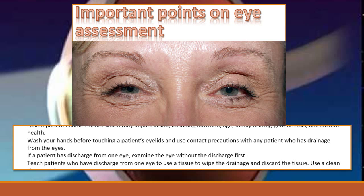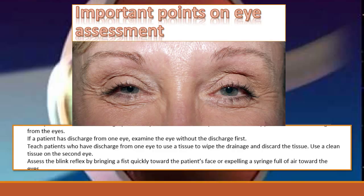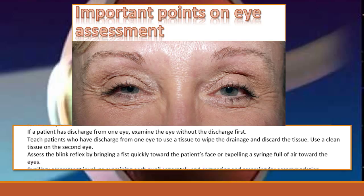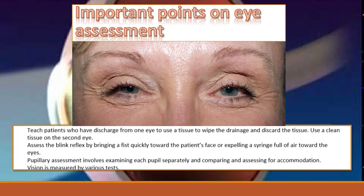If a patient has discharge from the eye, examine the eye without the discharge first before looking at the eye that has the discharge. Teach your patients who have discharge from one eye to use a tissue to wipe the drainage and dispose of the tissue, then use a clean tissue for the second eye so you don't cross-contaminate. Assess the blink reflex by bringing a fist quickly towards the patient's eye or expelling a syringe full of air towards the eye.